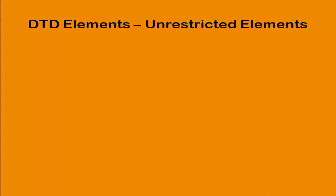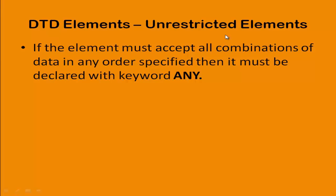As the name states, unrestricted means there is no boundary, no limits. If the element must accept all combinations of data in any order, then it must be declared with the keyword ANY. It means that if you specify your element with the keyword ANY, even if the XML document doesn't follow the rules, the parser will not throw an error. There is no restriction on your elements if you specify the keyword ANY.